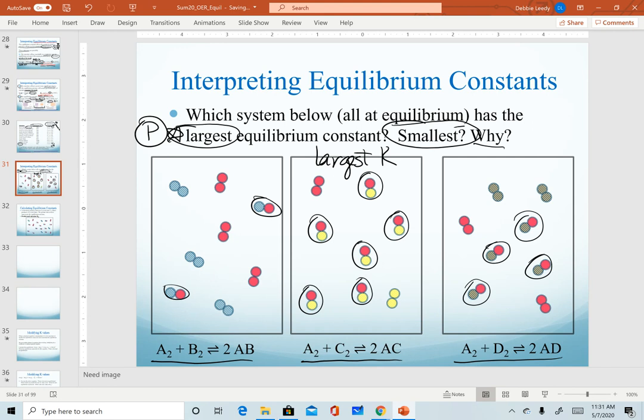And the one that has the smallest k value would be the most reactant favored. Another way to think about that is it has the least products. And so that would be our first, or the left container here, has the smallest k value.